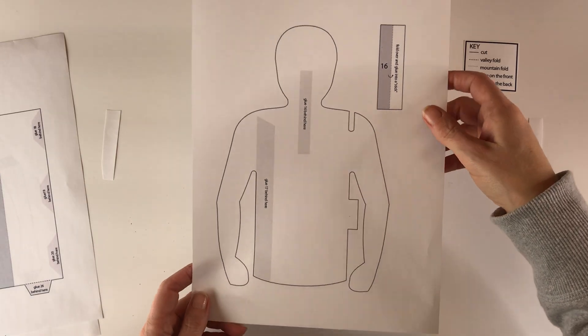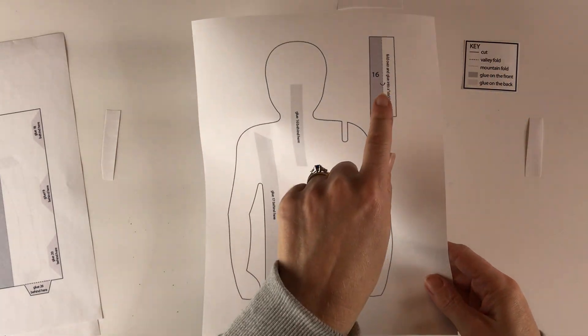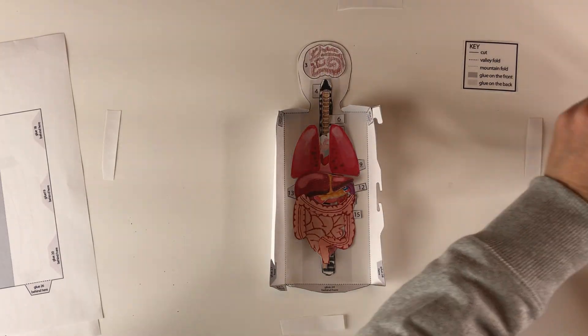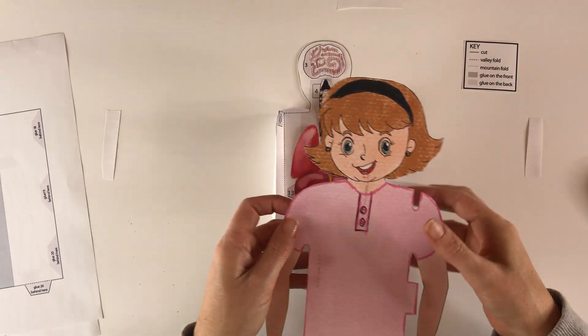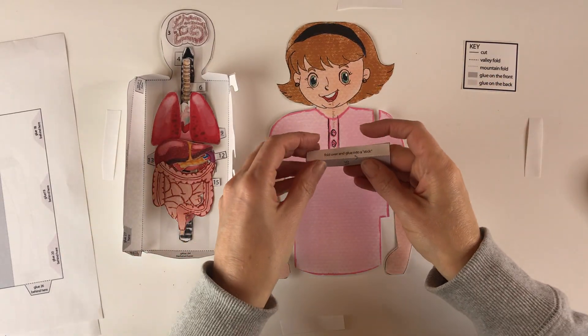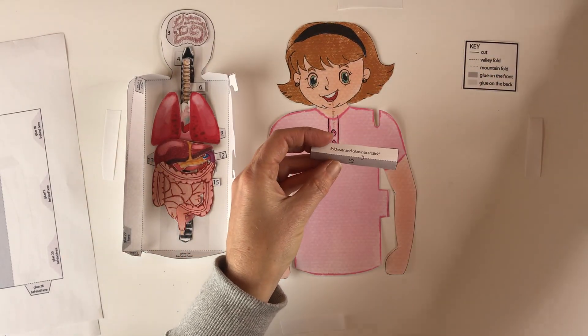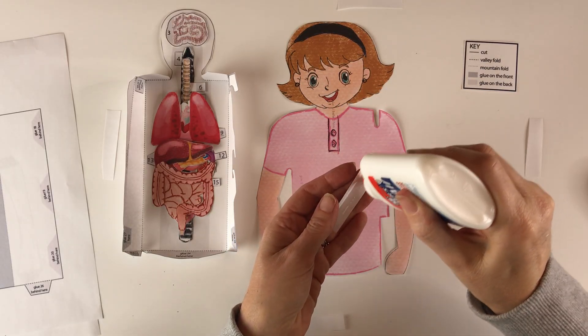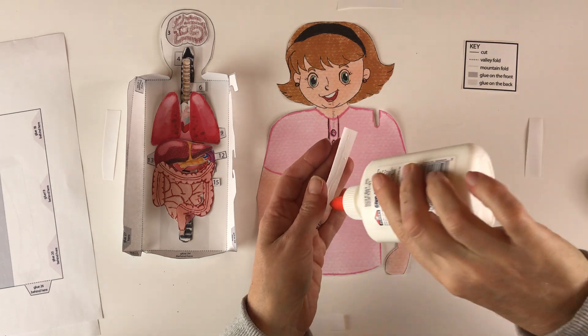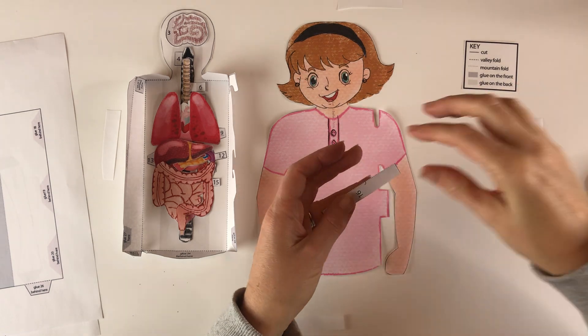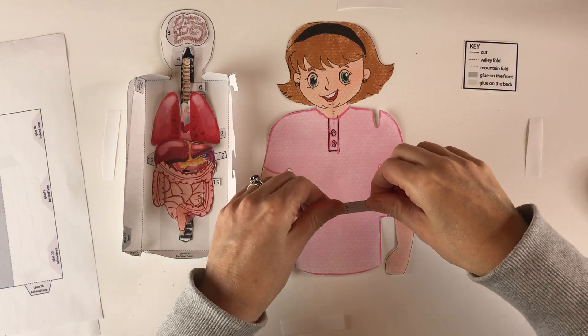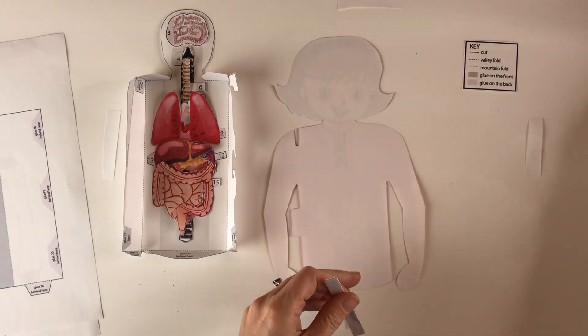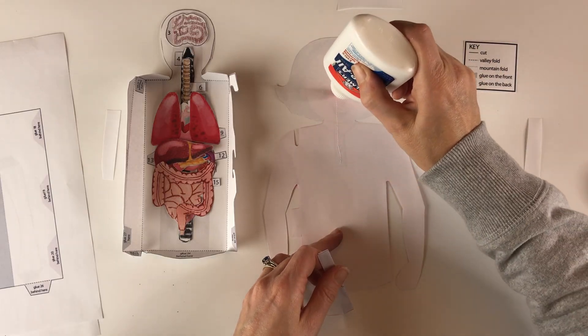Alright, so then the next step is to work on the front of the body. That would be the sheet here. Again, color it in, cut it out, and then this is going to be used as a support piece. So I have these colored in and cut out right here. I'm going to put this part to the side for a moment. So this part, you just follow the instructions. As it says, fold over and glue into a stick, which I will do. Either way will work.